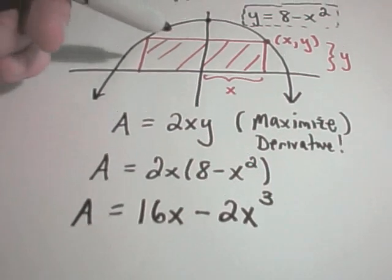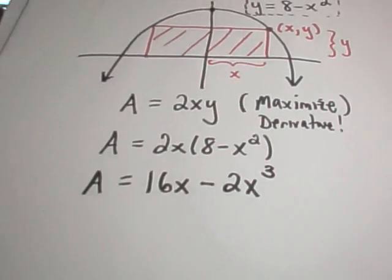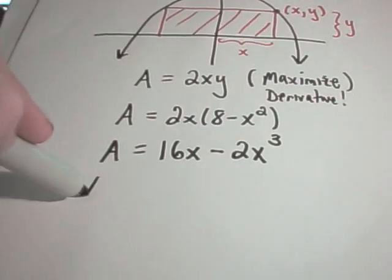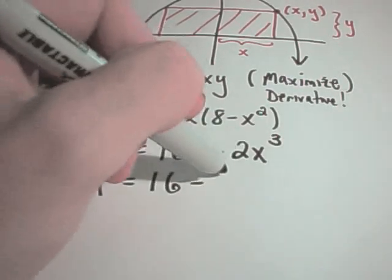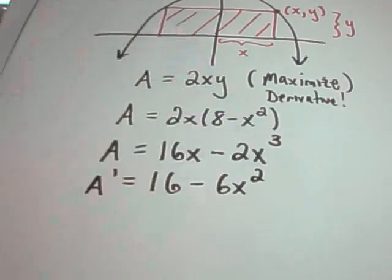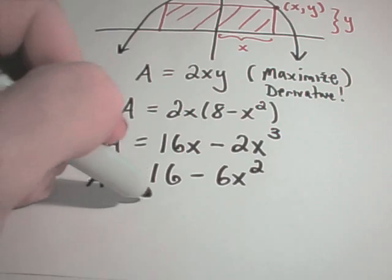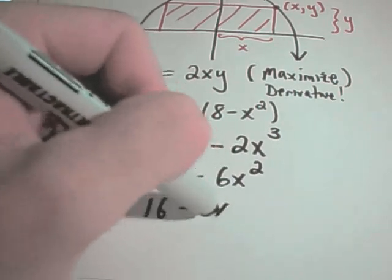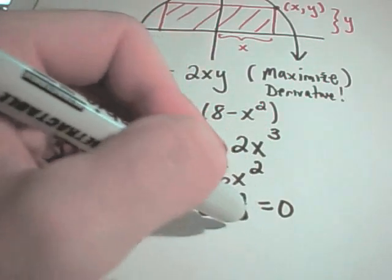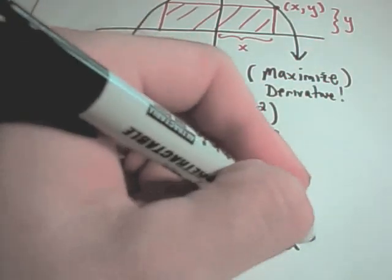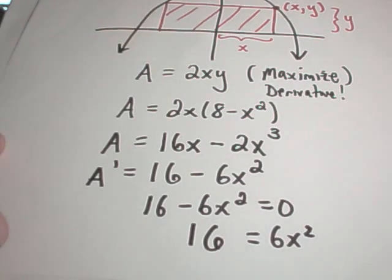And that's going to be the area of this rectangle, all based on just knowing how far out we go. So, just like before, we'll simply take a derivative. The derivative will get 16 minus 6x squared. And I need to find the critical numbers of this. So, I'll set this stuff equal to 0. It looks like I can add 6x squared over to the right side. Leave 16 on the left.